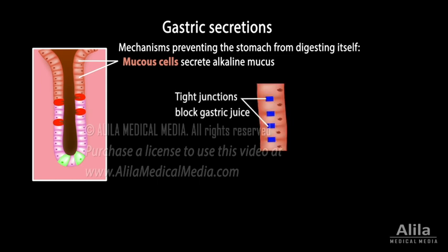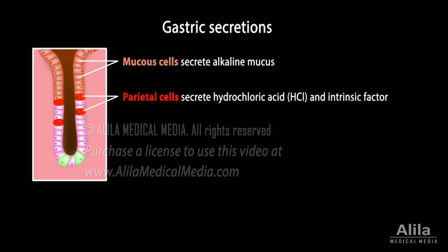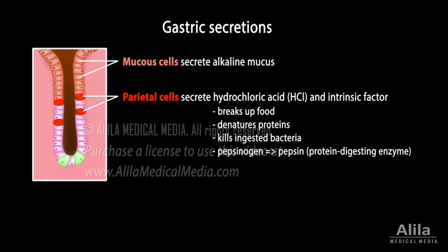Other protective measures include tight junctions between epithelial cells to block gastric juice from seeping into the underlying tissue, and a rapid turnover of gastric epithelial cells to quickly replace injured cells. Parietal cells secrete hydrochloric acid and intrinsic factor. Hydrochloric acid has several functions: it breaks up food, denatures proteins, kills ingested bacteria, and activates the protein-digesting enzyme pepsin.